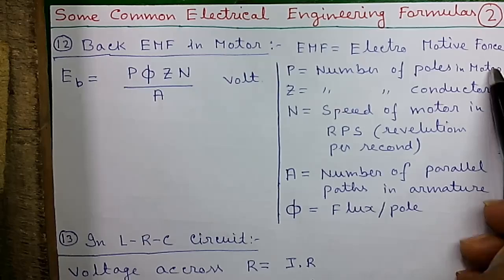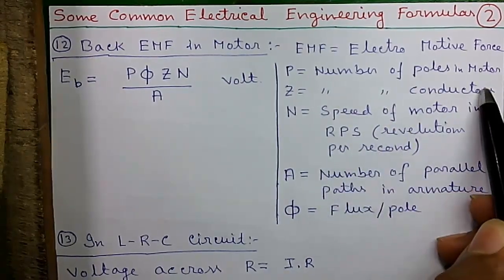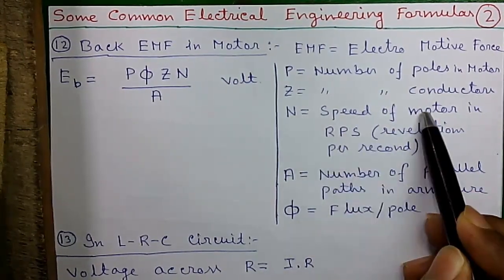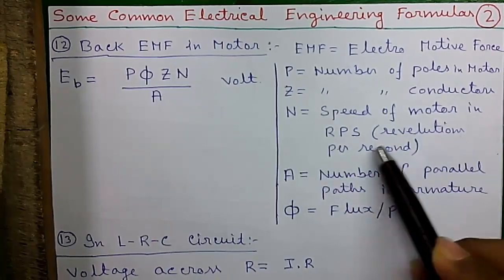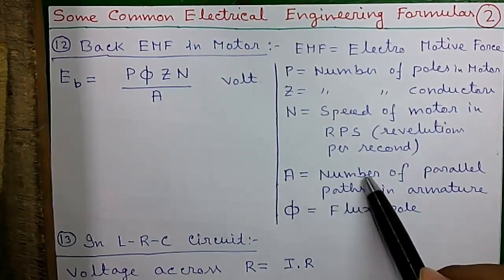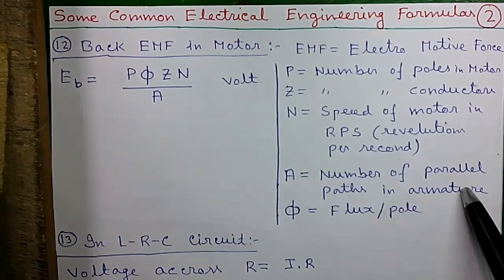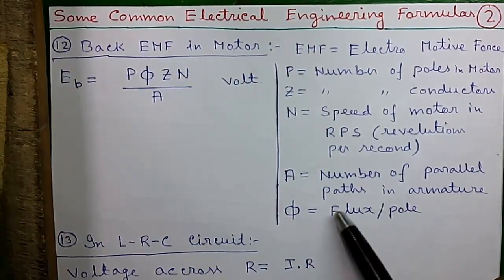Z equals to number of conductors, n equals to speed of motor in RPS or revolutions per second, A is the number of parallel paths in the armature, and finally φ equals to flux per pole.